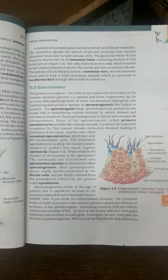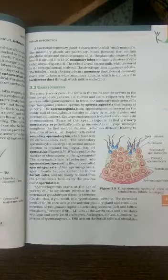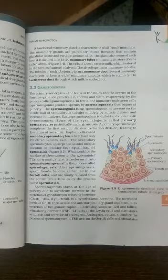The glandular tissue of each breast is divisible into 15 to 20 mammary lobes containing clusters of cells called alveoli. Mammary lobes are made up of cells which synthesize milk, and those cells are called alveoli cells.